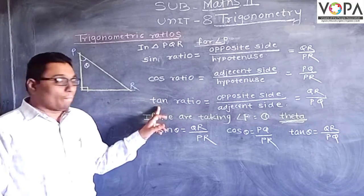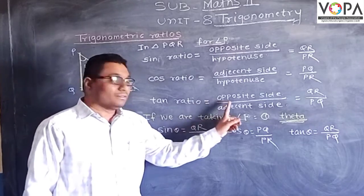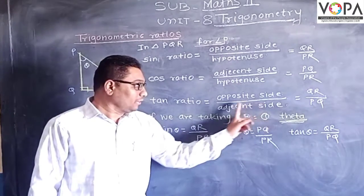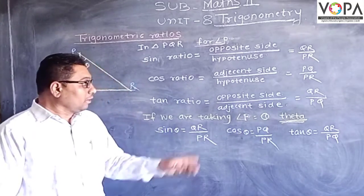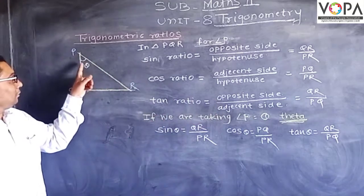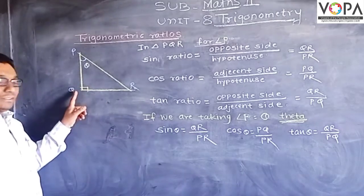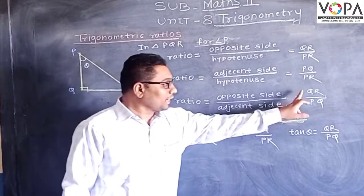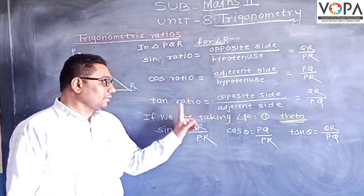The third ratio is the tangent ratio. The tangent ratio is opposite side upon adjacent side. For angle P, the opposite side is QR and the adjacent side is PQ. Hence, QR upon PQ is the tangent ratio.